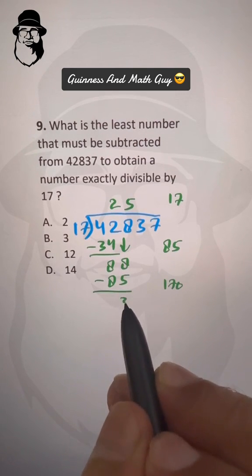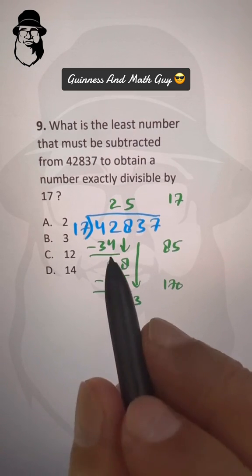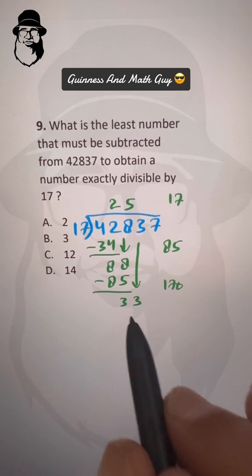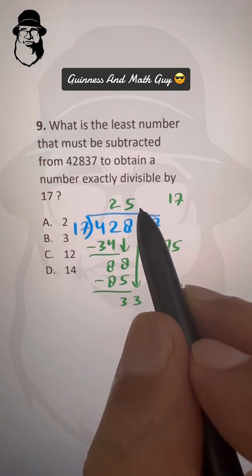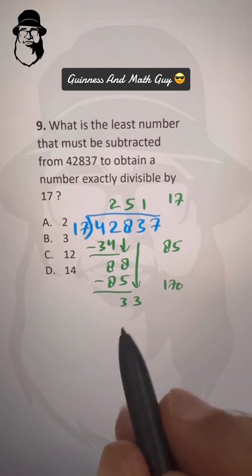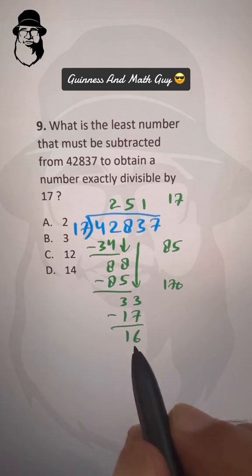Subtract here, we have 3. Bring this 3 here: 33. 17 times 2 is 34, 1 more, so let's do 17 times 1, that is 17, and we have 16 as remainder here.